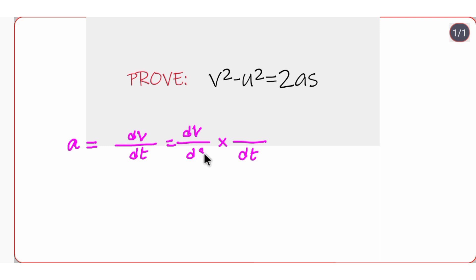Here we will write ds and here it is ds, so we break dv/dt in such a way that it doesn't affect it. So ds/ds can be cancelled out. Now we can write ds/dt. We know that change in displacement by change in time is velocity, so we can replace ds/dt with v, giving us a equals v times dv/ds.